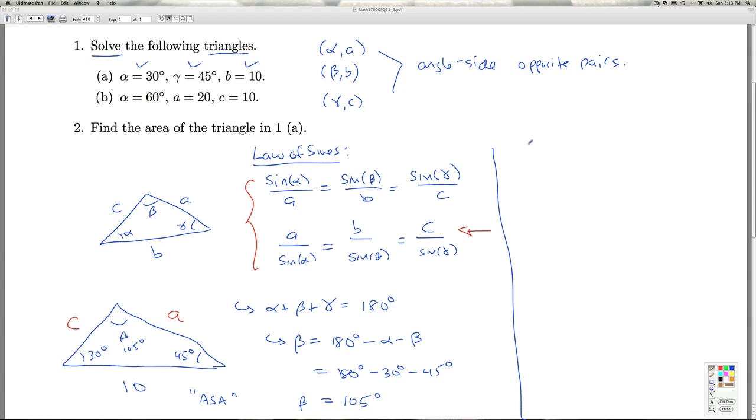So if we go after A, I know A over sine of alpha is B over sine of beta. So A over sine of 30 degrees is B, which is 10, over the sine of 105 degrees.